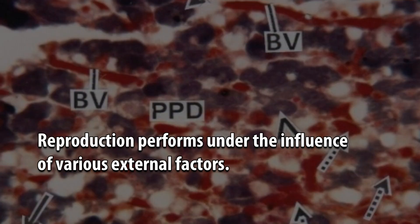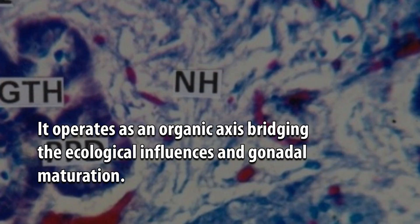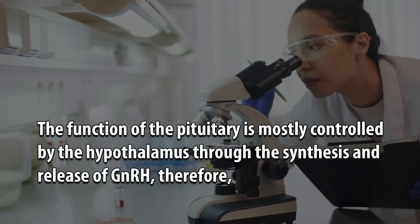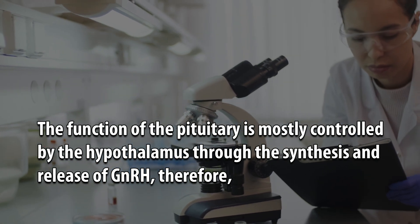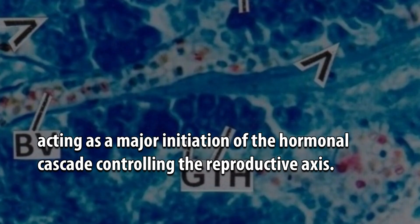Reproduction performs under the influence of various external factors. It intervenes through the hypothalamo-hypophysial-gonadal subsystem, which operates as an organic axis bridging ecological influences and gonadal maturation. The function of the pituitary is mostly controlled by the hypothalamus through the synthesis and release of GnRH, acting as a major initiator of the hormonal cascade controlling the reproductive axis.